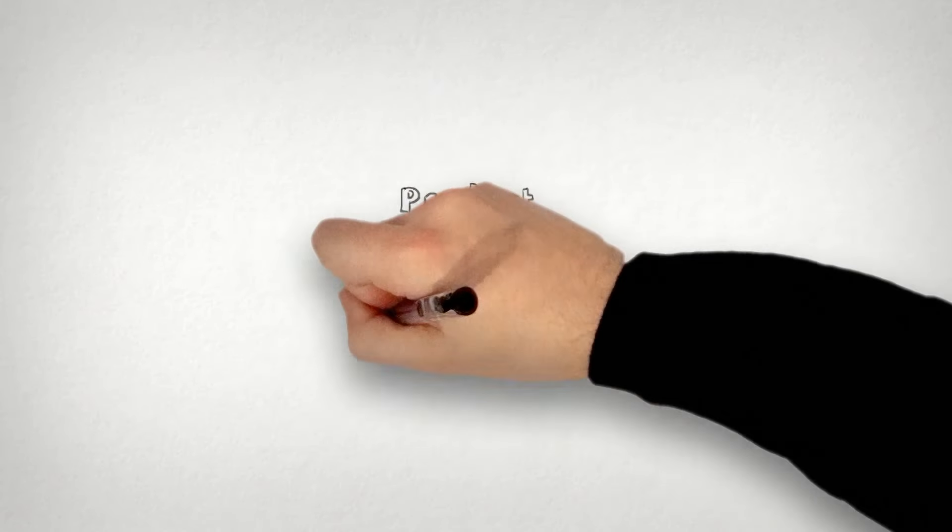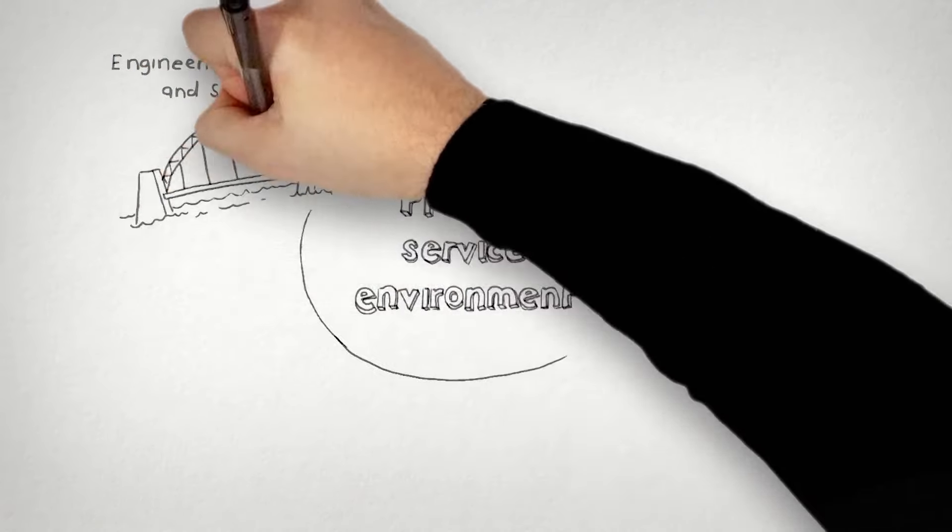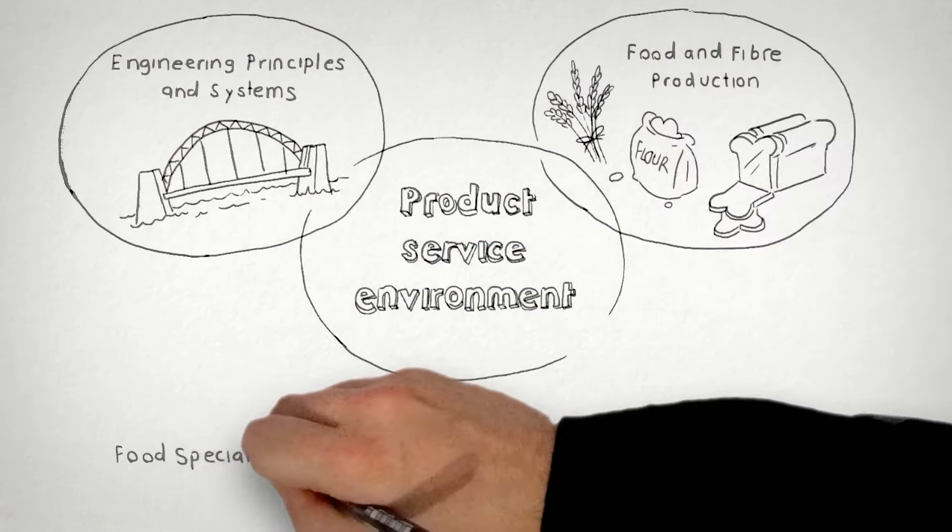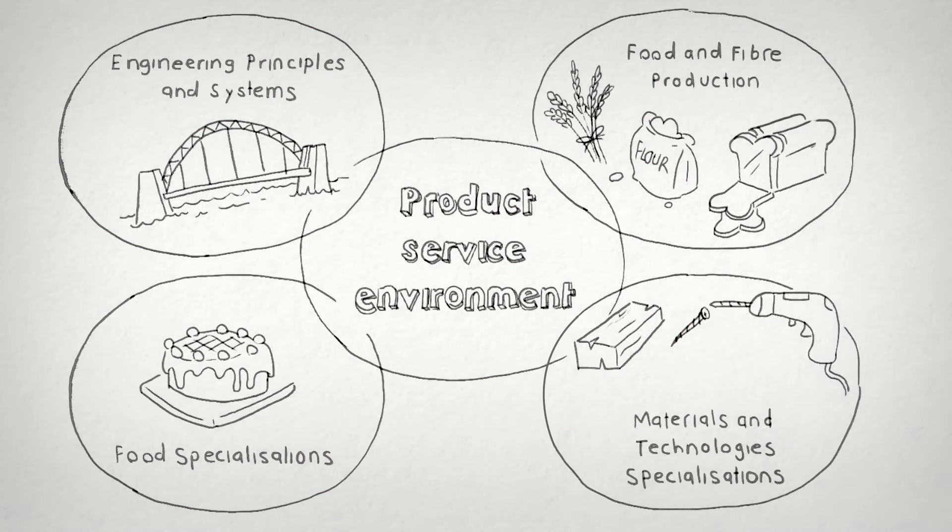Design and technologies in the Australian curriculum asks students to see technologies through the lenses of four different contexts: engineering principles and systems, food and fibre production, food specialisations, and materials and technologies.